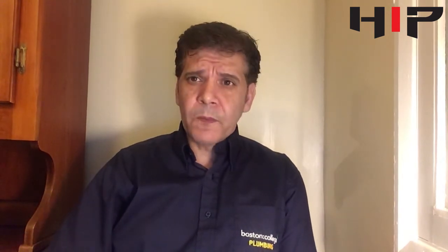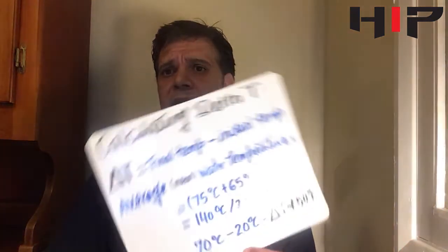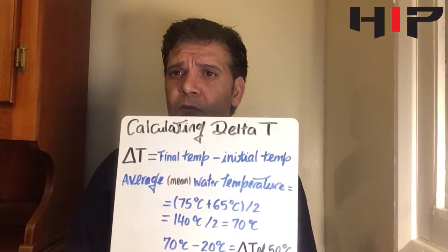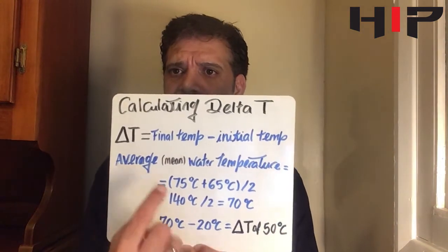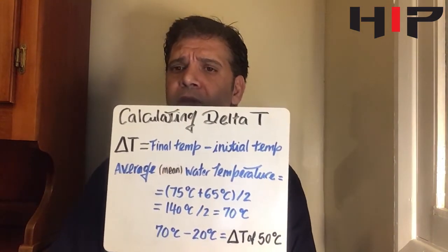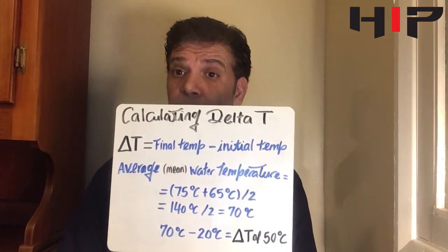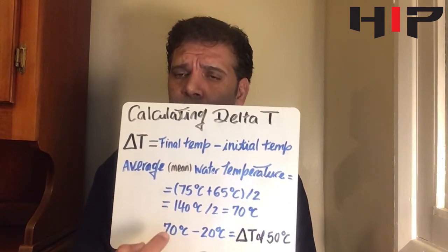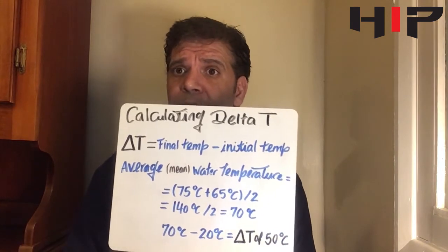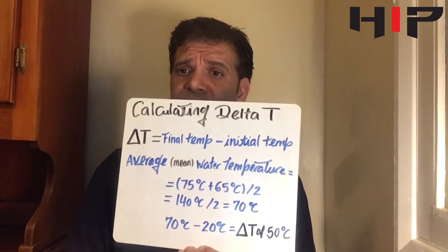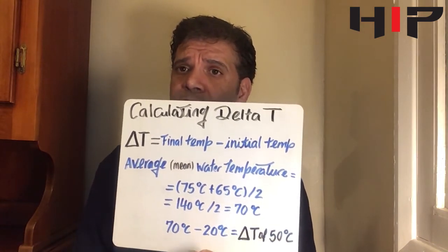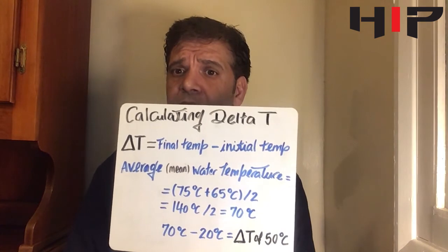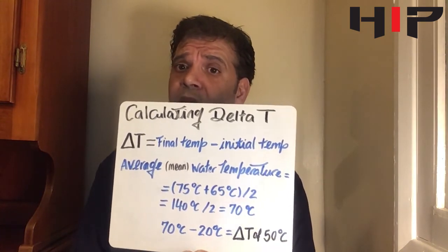Delta T is a difference between the average water temperature and the ambient air temperature. To calculate delta T — that is the symbol — we need to find the average, taking the final and initial temperatures. So your flow temperature is 75 degrees; adding 75 to 65 degrees, which is your return, gives you 140 degrees. Divide that by 2, it gives you 70 degrees. You then take 20 degrees, your consistent air temperature, from 70, which gives you a final delta T average of 50 degrees. This is how you calculate delta T.